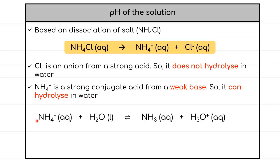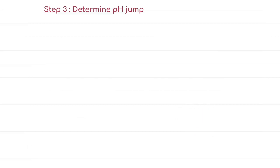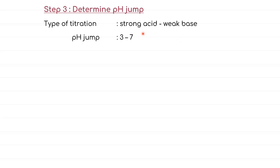NH₄⁺ reacts with H₂O to form NH₃ and H₃O⁺. The presence of H₃O⁺ indicates that the salt is acidic with pH less than 7. The titration of strong acid and weak base forms an acidic salt with pH less than 7. Therefore, the pH jump will be between 3 and 7.